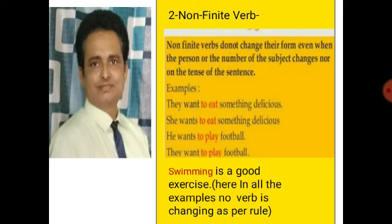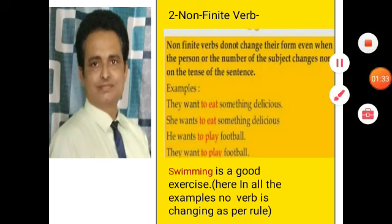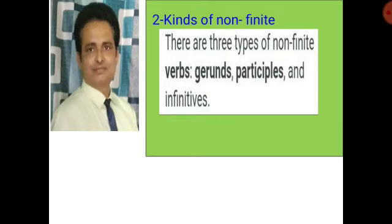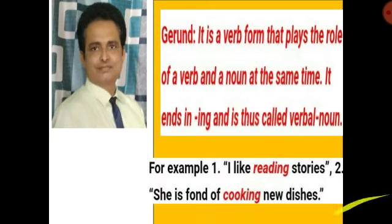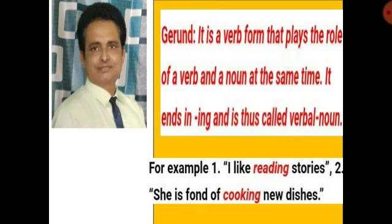Non-finite verb is divided into three parts: number one, gerunds; number two, participles; and number three, infinitives. A gerund acts as a noun. For example: number one, I like reading stories — 'reading' is a gerund here. Number two, she is fond of cooking new dishes — 'cooking' is a gerund here. Swimming is a good exercise — 'swimming' is a gerund here. Seeing is believing — 'believing' is a gerund here. In all these cases, they are not changing according to tense, persons, and numbers, so they are non-finite verbs.